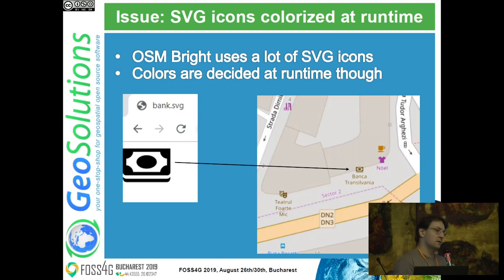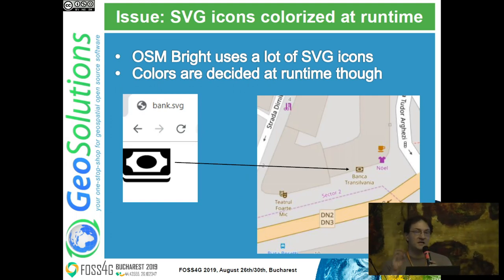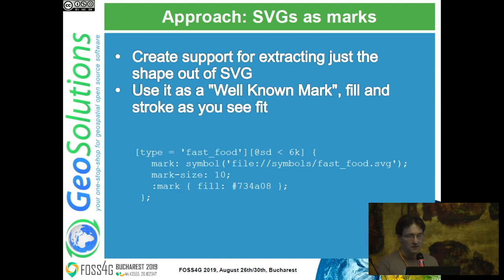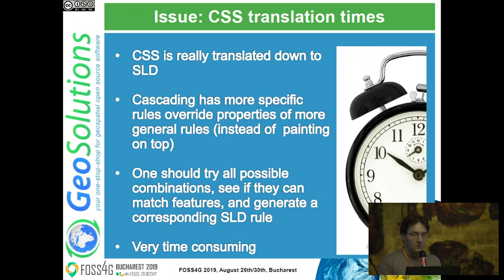Another issue I found was that Carto CSS for OSM Bright uses a lot of little SVGs. GeoServer supports SVGs but it renders them as-is - with their colors, strokes, and appearance. In Carto CSS they are used as scalable shapes that you can color whatever you want, and that wasn't supported. So it got added: right now in GeoServer you can use an SVG as a well-known mark and then decide what color to use to fill them, stroke them, and so on.